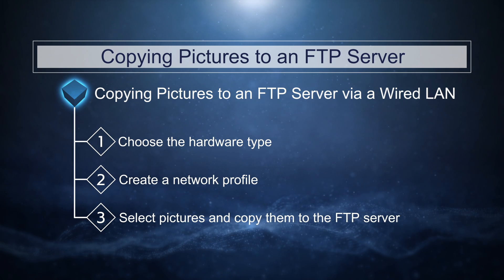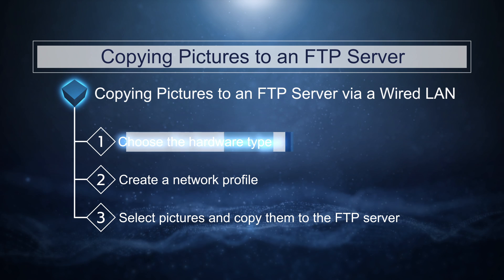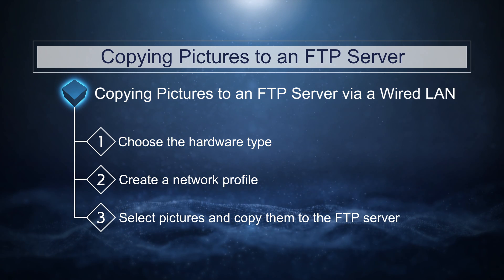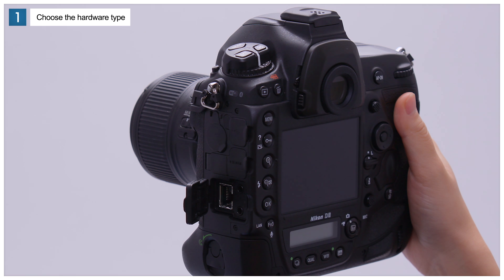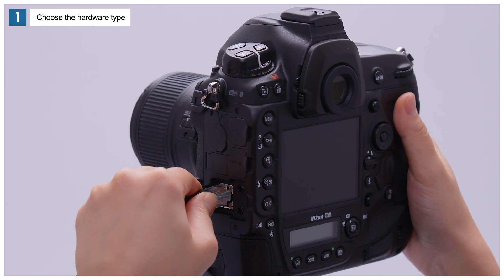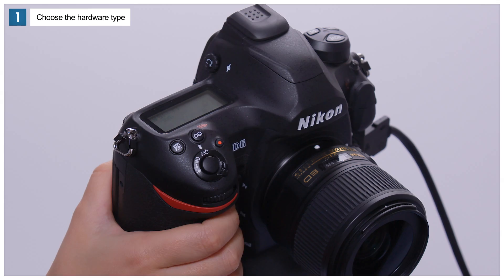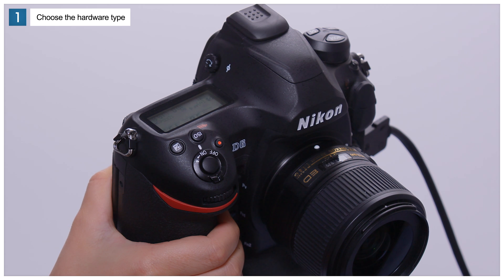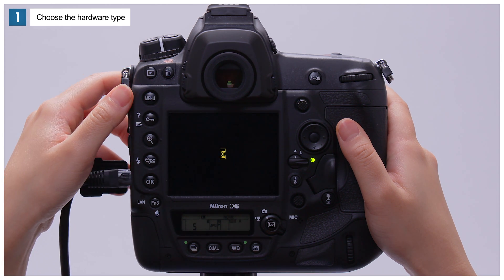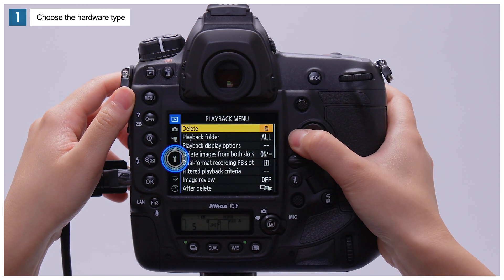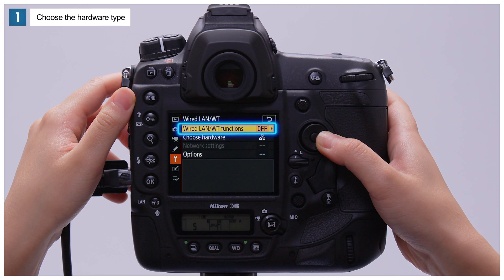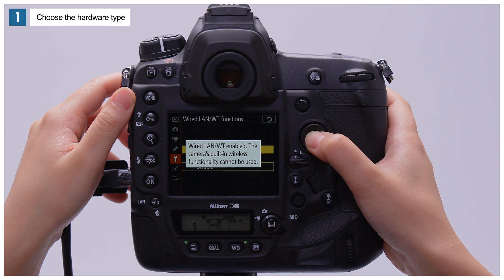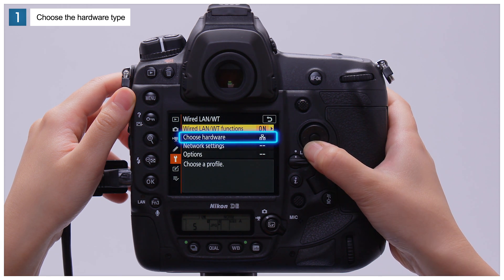There are three steps to this process. First, connect an Ethernet cable and choose the hardware type. Start by turning the camera off and connecting the camera to the computer using an Ethernet cable. Turn the camera on and press the menu button to display the menus. Go to the setup menu, select wired LAN WT, then Wired LAN WT functions, and choose Enable. Select Choose Hardware and choose Wired LAN.